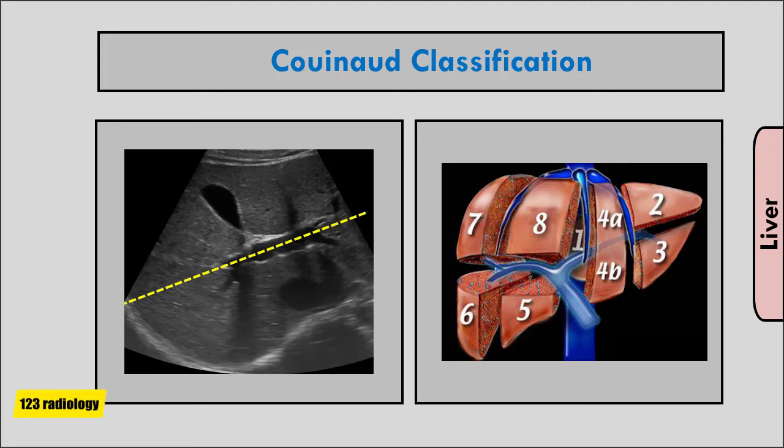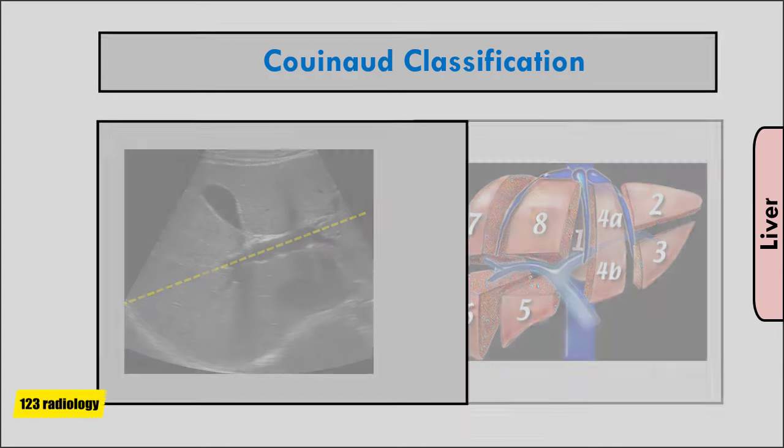Segment 1 is the caudate lobe. Segments 2 and 3 are the left superior and inferior lateral segments, respectively. Segment 4, which is further divided into 4a and 4b, is the medial segment of the left lobe. The right lobe consists of segments 5 and 6, located caudal to the transverse plane, and segments 7 and 8, which are cephalic to the transverse plane.